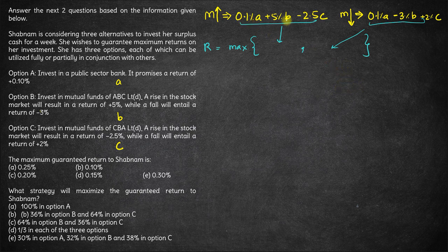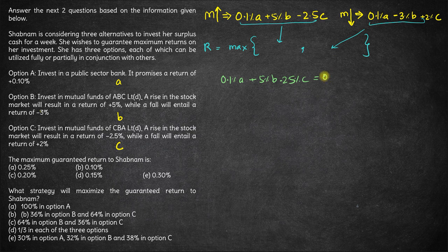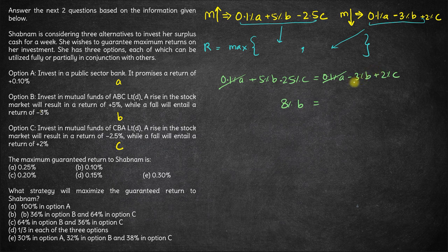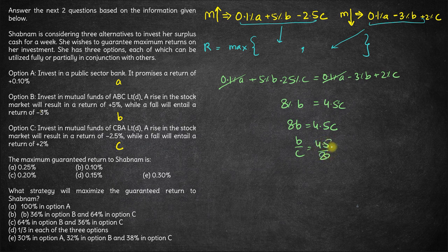So we equate both returns: 0.1% of A + 5% of B − 2.5% of C = 0.1% of A − 3% of B + 2% of C. The 0.1% of A cancels on both sides, giving 8% of B = 4.5% of C, so B/C = 4.5/8 = 45/80 = 9/16. The ratio of investment in B to C should be 9:16.